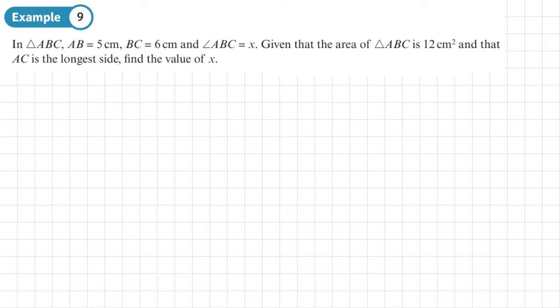So let's start with a sketch as we normally do. It seems like all my sketches look the same. A, B and C. AB is 5 centimetres, so let's put 5 centimetres there. BC is 6 centimetres and angle ABC,